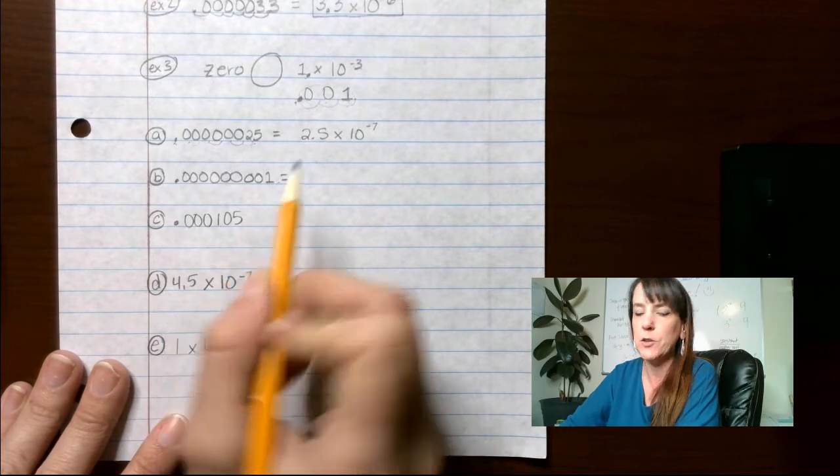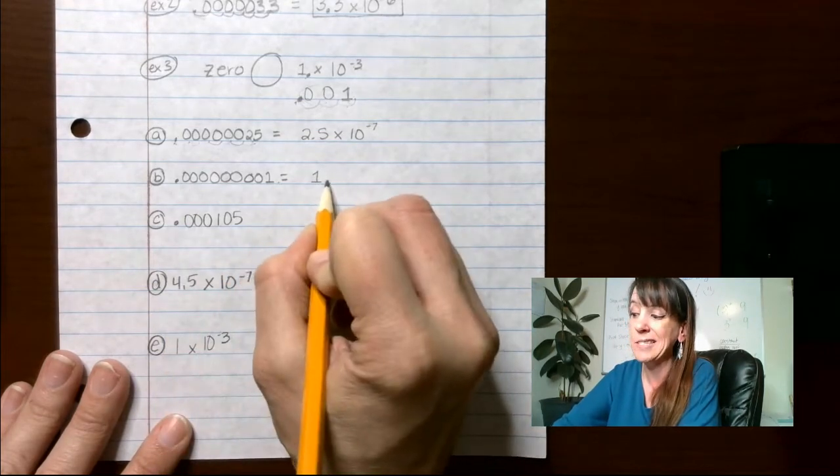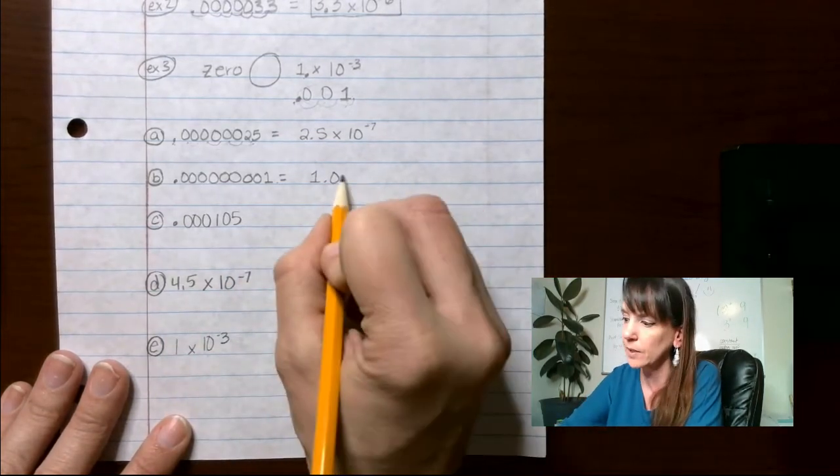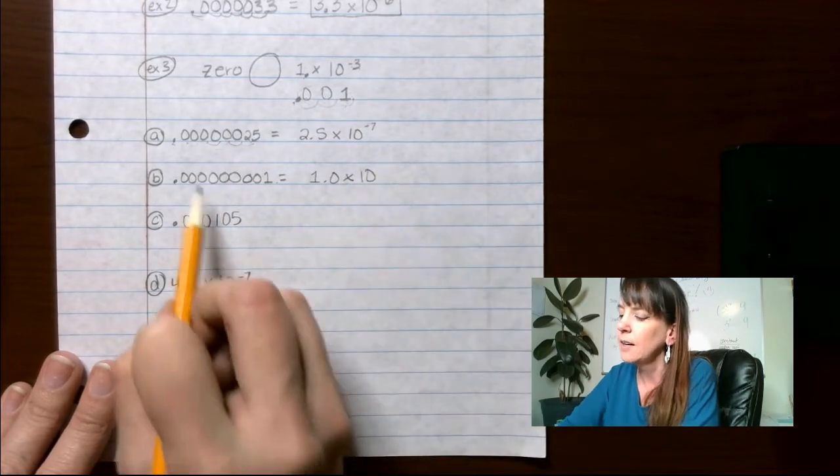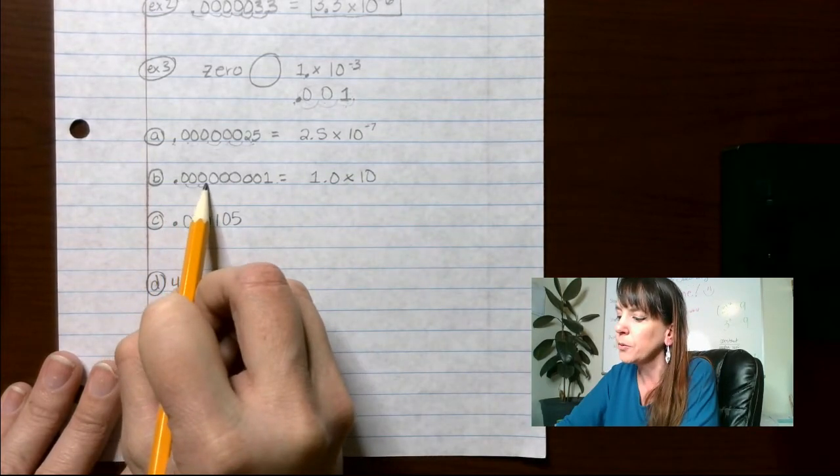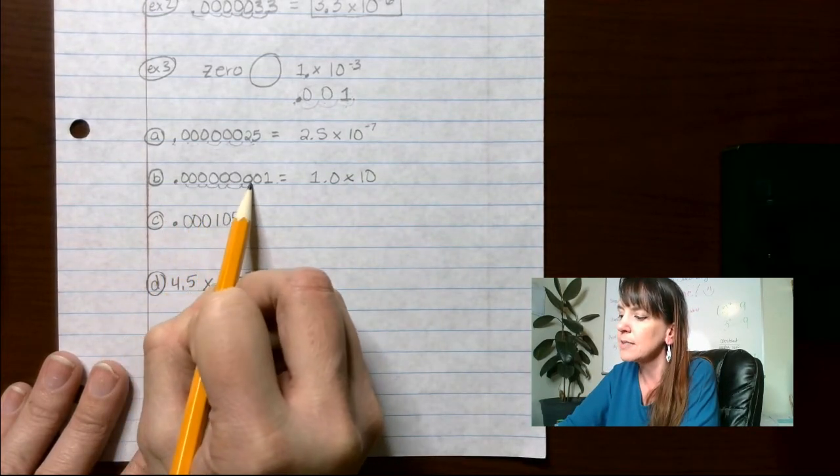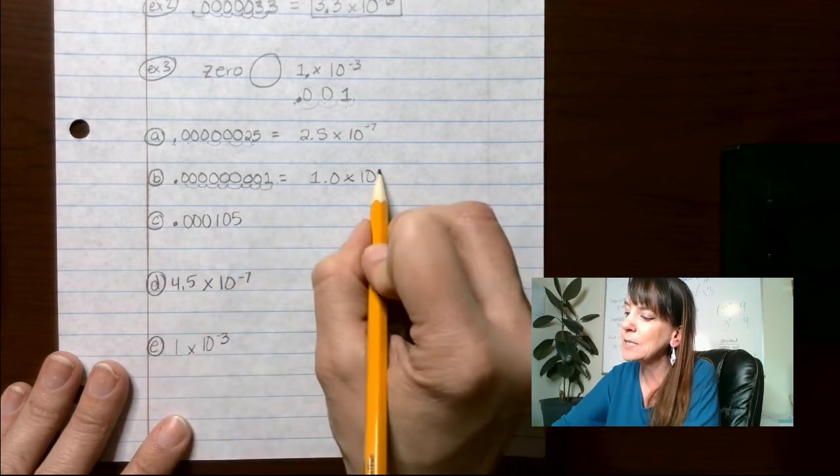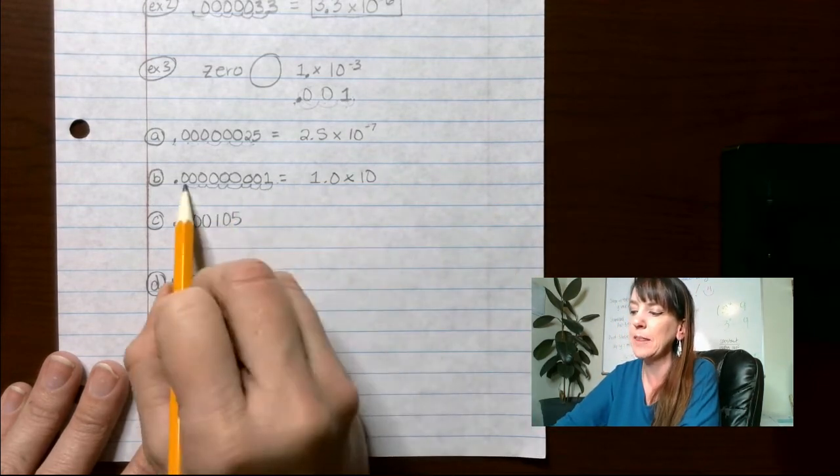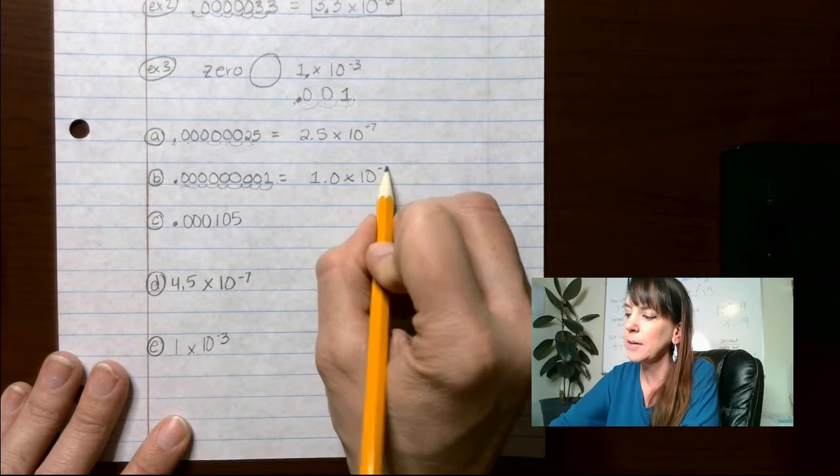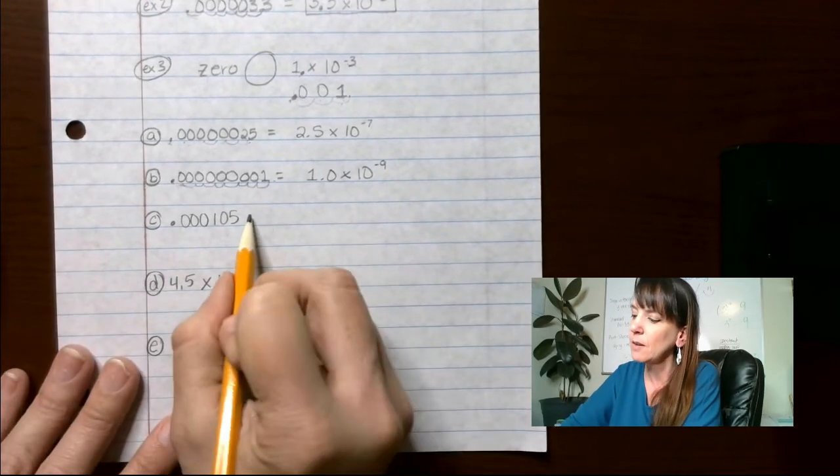This one, we're going to move the decimal all the way over to the 1. So it's just going to be 1.0 if you want, or just 1. That's fine too. Times 10 to the... We're going to go 1, 2, 3, 4, 5, 6, 7, 8, 9 spots over. We made this number larger. So it's going to make this one smaller.